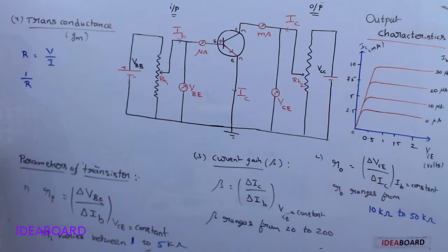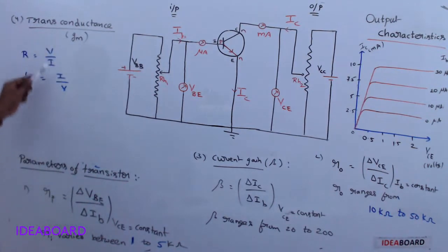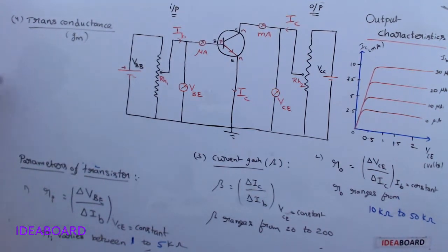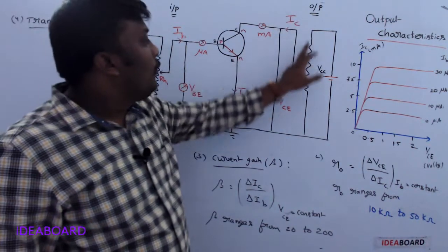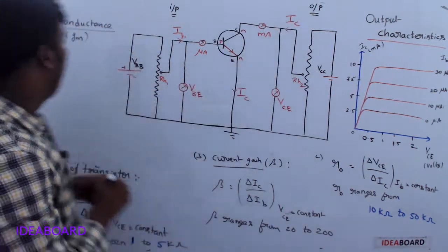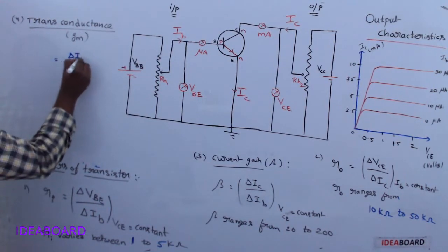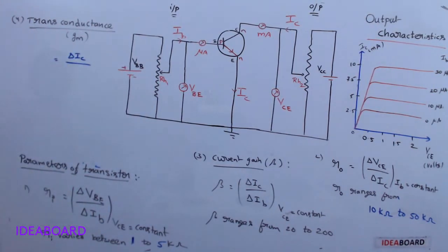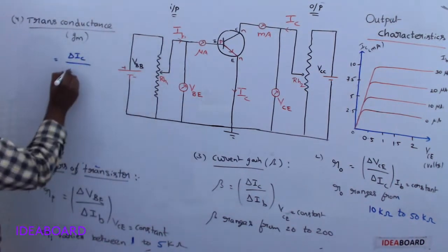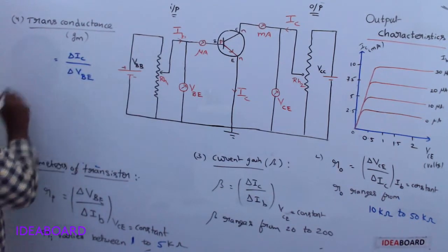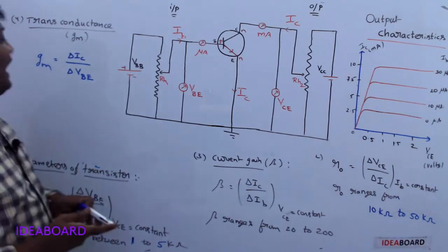The fourth parameter is transconductance, denoted by gm. In recent examinations, transconductance is frequently asked. Conductance is the reciprocal of resistance — I/V. Transconductance is an electrical characteristic relating the current through the output of a device to the voltage across the input. The formula is gm = ΔIC / ΔVBE.